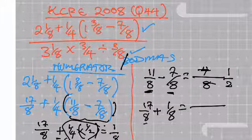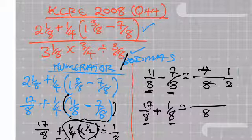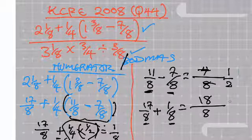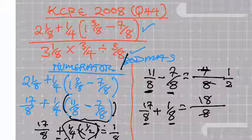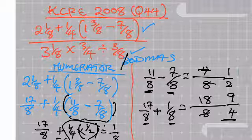The denominator is the same, so I use one denominator and add the numerators: 17 plus 1 is 18, giving 18 over 8. That can be simplified: 2 goes into 8 four times, and 2 goes into 18 nine times. So the numerator becomes 9 over 4.